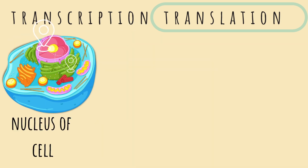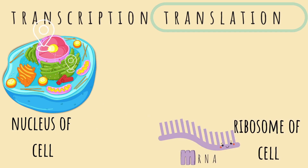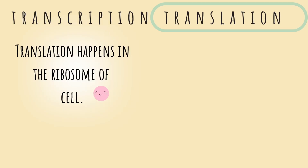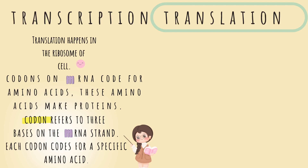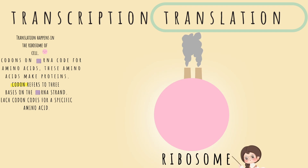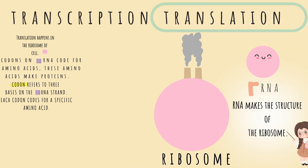mRNA has moved from the nucleus of the cell to the ribosomes — this is where translation begins. Translation happens in the ribosomes of the cell. Codons on mRNA code for amino acids, and these amino acids make proteins. A codon refers to three bases in a row on the mRNA strand, and each codon codes for a specific amino acid. The ribosome is much like a manufacturing plant because proteins are made here. rRNA makes the structure of the ribosomes — ribosomes are made of proteins and rRNA, hence the name ribosomal RNA.